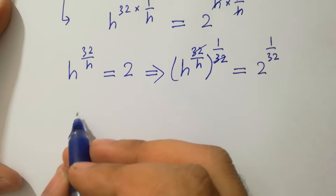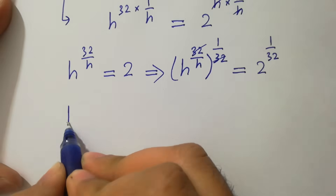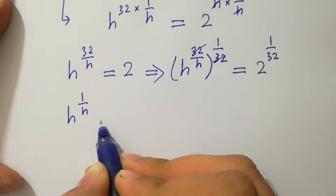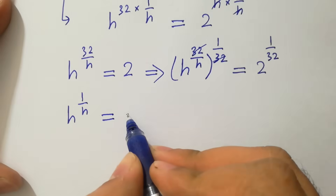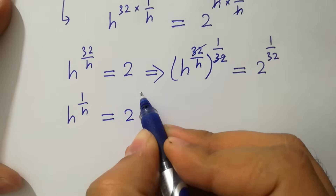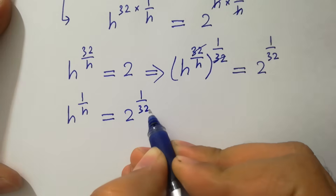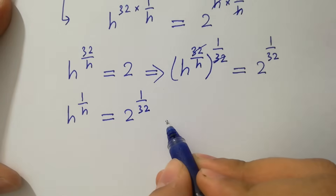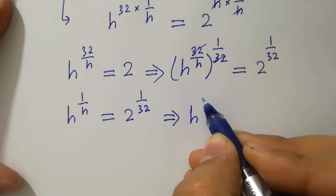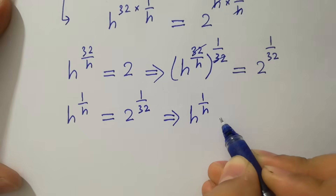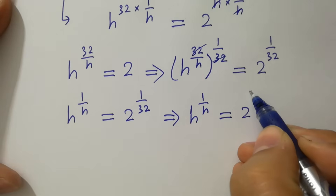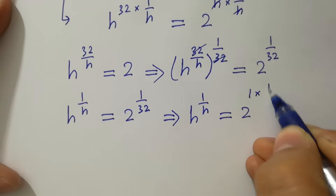We have h to the power 1 over h equal to 2 to the power 1 over 32, which is the same as h to the power 1 over h equal to 2 to the power 1 times 1 over 32.